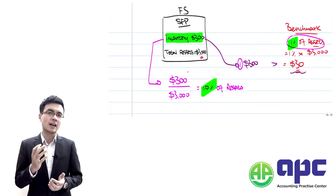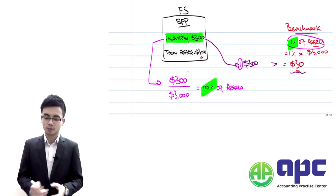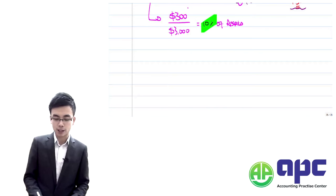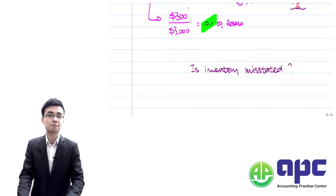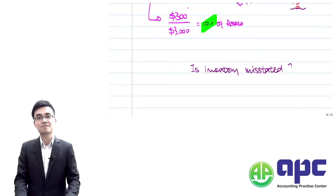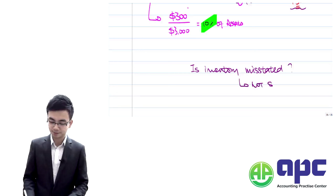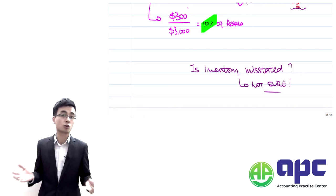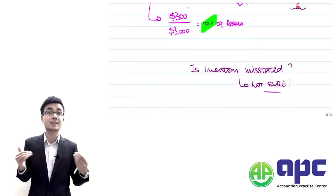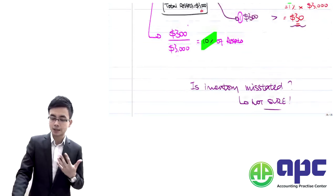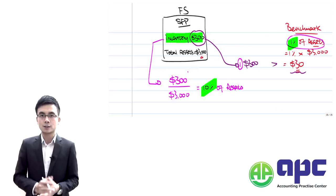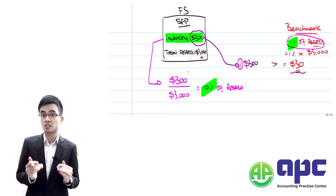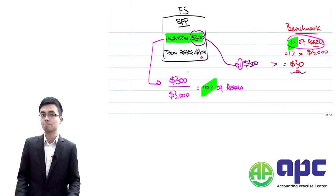Because inventory is material, is it misstated? The answer is we're not sure. At the audit planning stage, we haven't checked it in detail. Inventory is material because its value is significant — it accounted for more than 1% of total assets. It simply means the inventory value is vital; it does not mean the inventory is misstated.